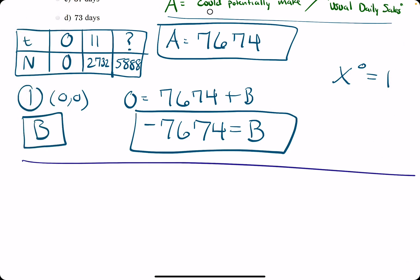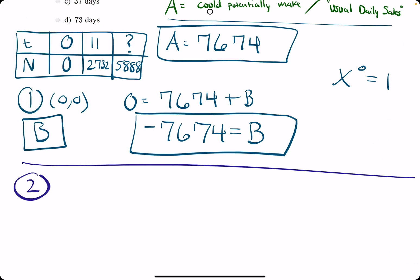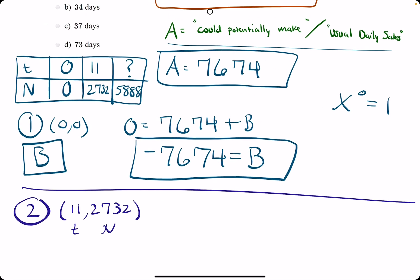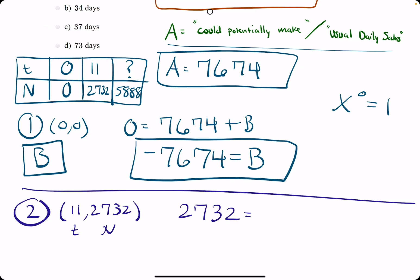We restart that process, but now we use the ordered pair (11, 2732) as our T and N. We plug the N in, so we have 2732 equals our A value, 7674, plus our B value, negative 7674.